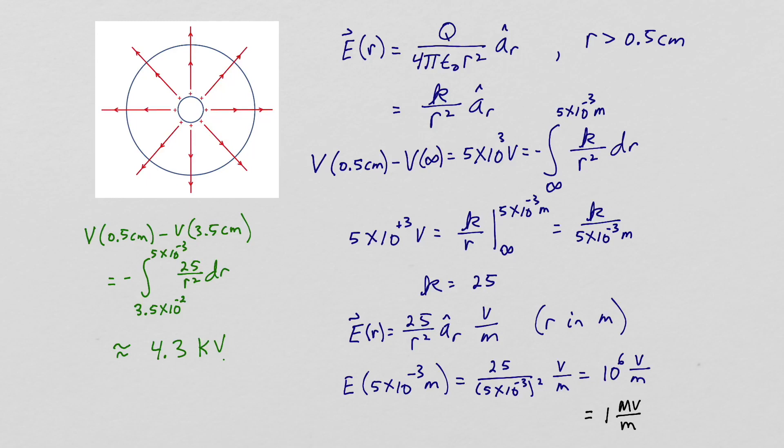The dielectric breakdown strength of air is 3 megavolts per meter and the peak electric field inside our globe is 1 megavolt per meter. This indicates that there is a reduced pressure inside the globe.